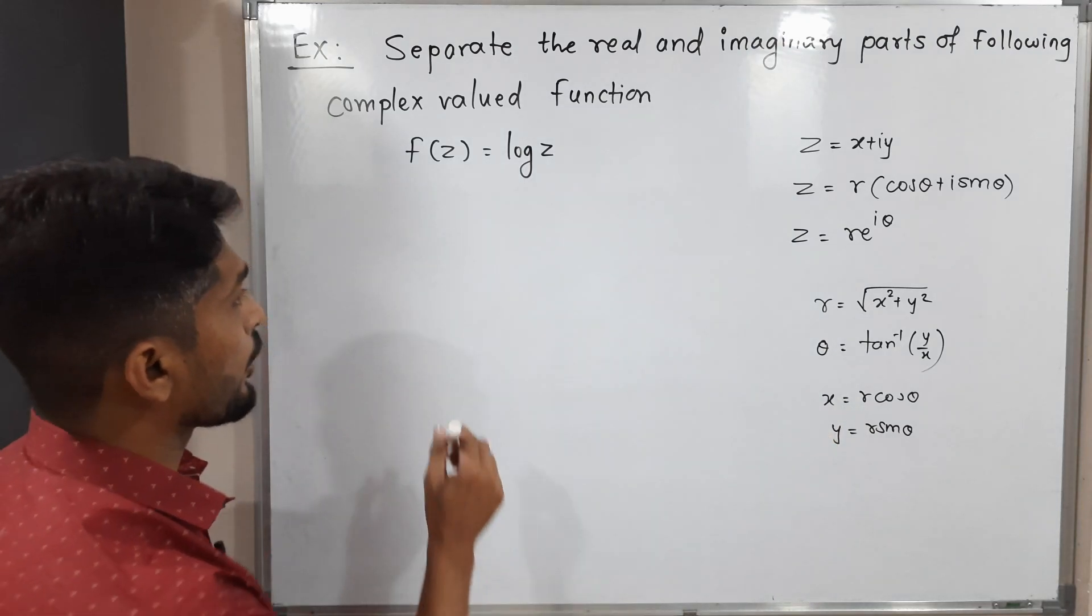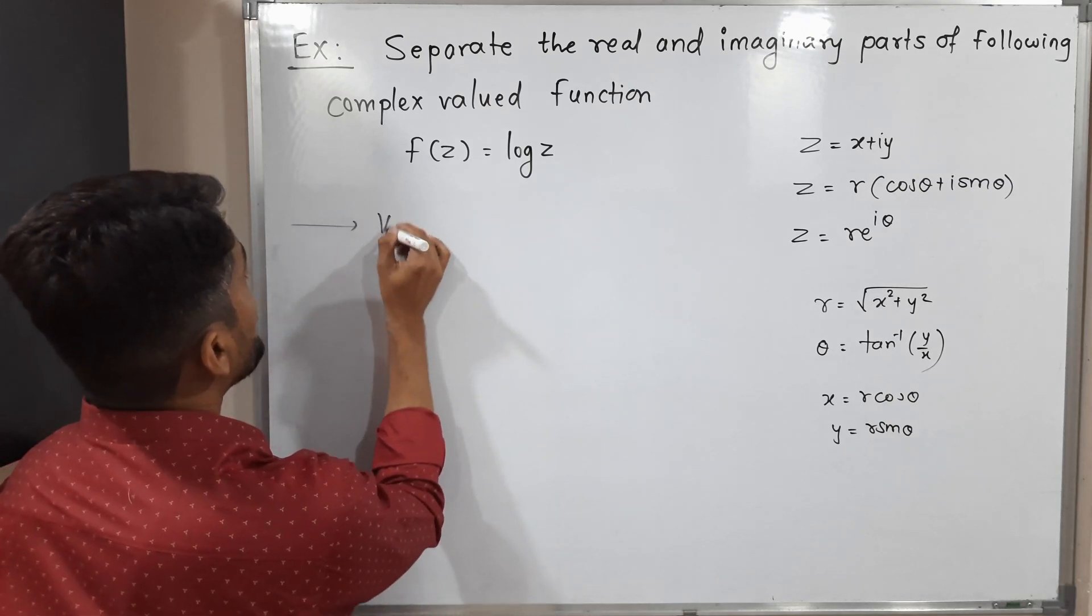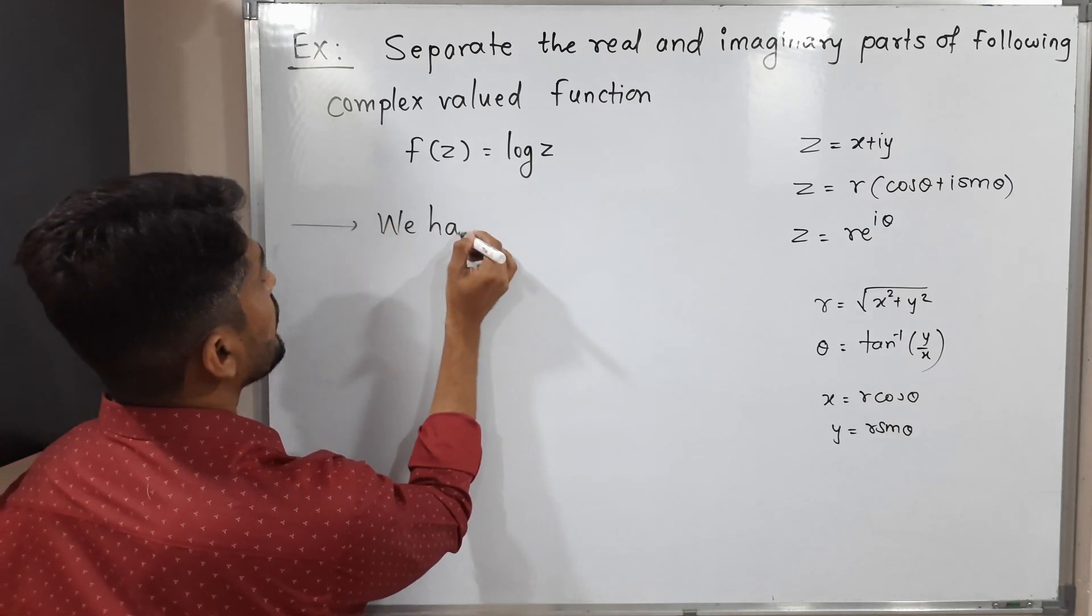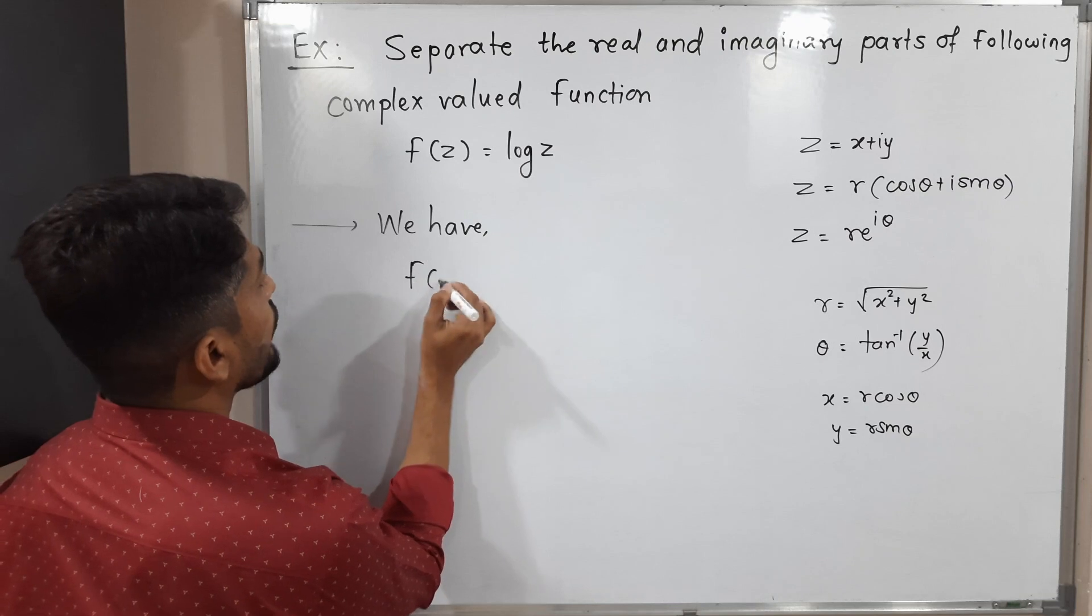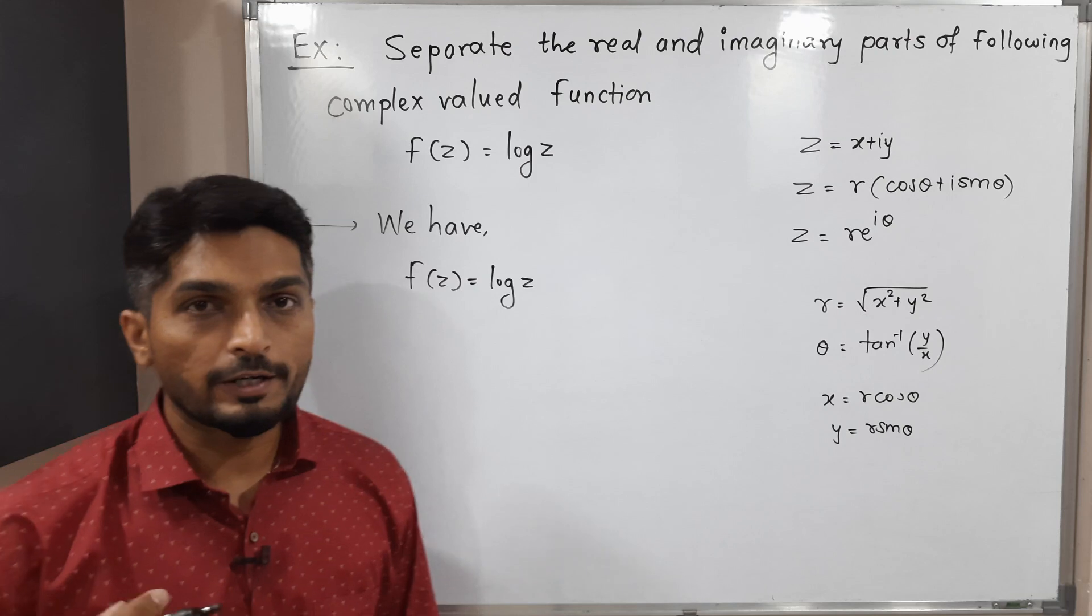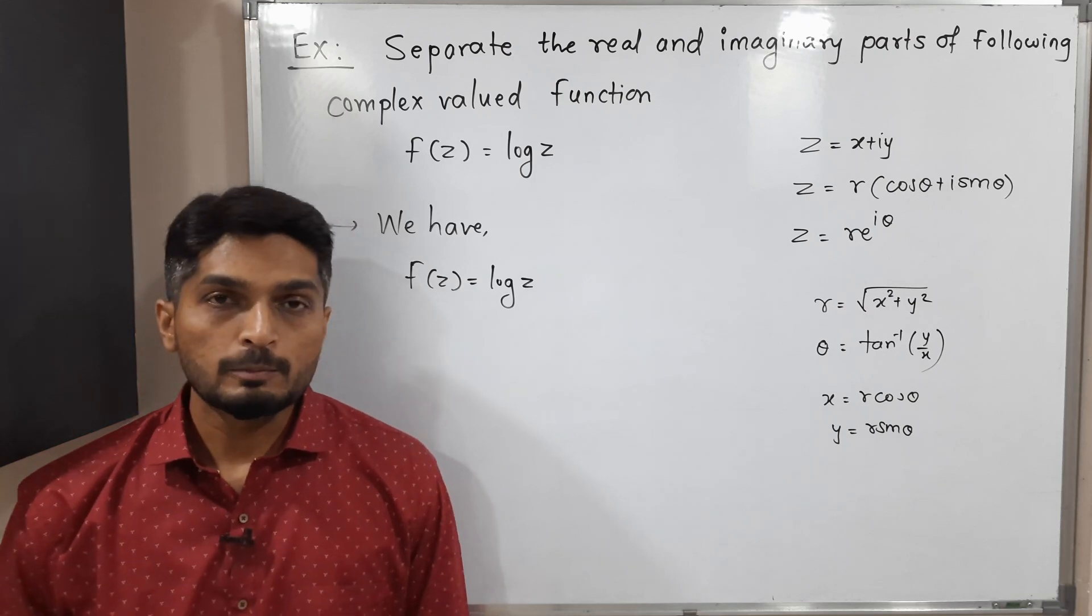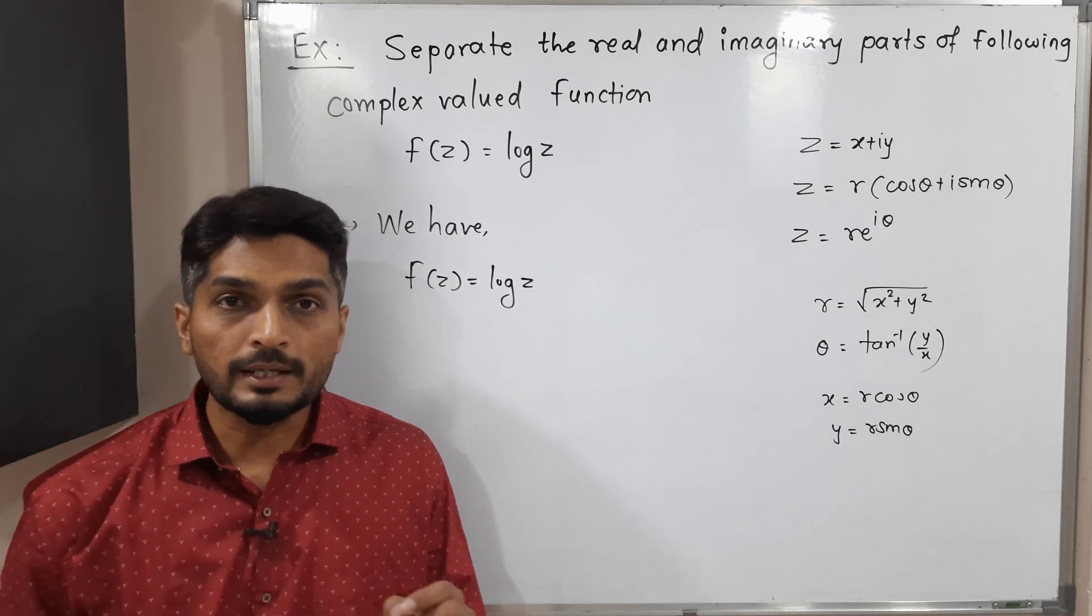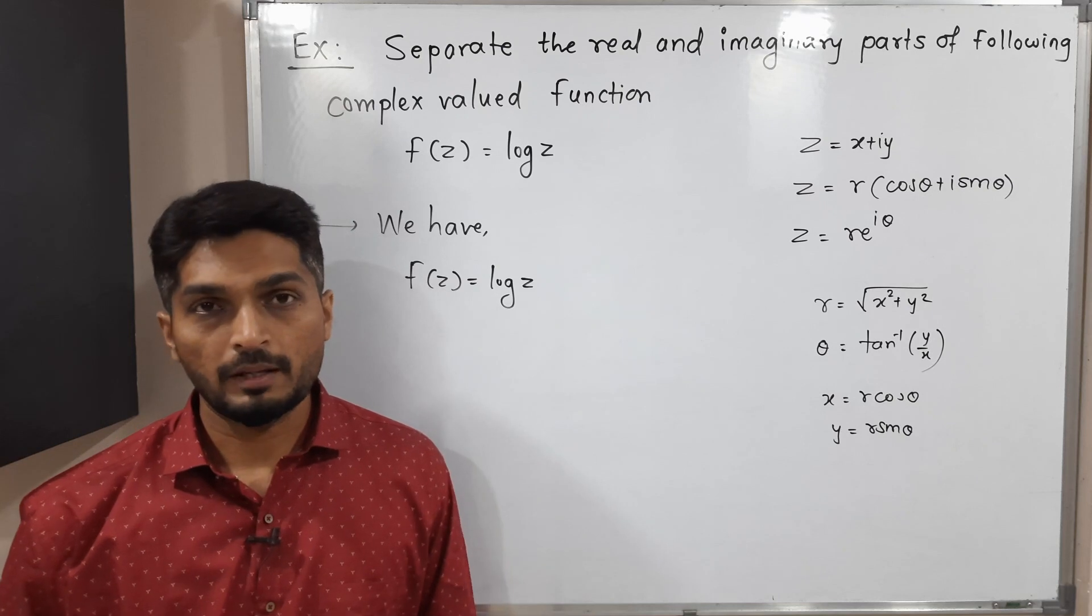So here let us start to solve this problem. We have f(z) = log z. We have to separate into real and imaginary parts, to find u(x,y) and v(x,y). Generally what we do is replace z by x + iy, and we separate out real and imaginary parts easily. But this time that technique doesn't work.